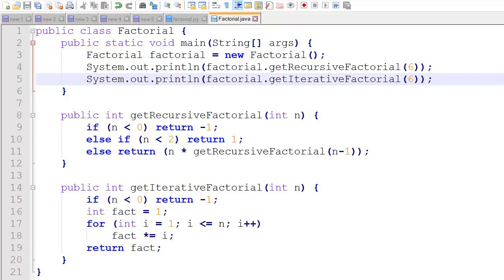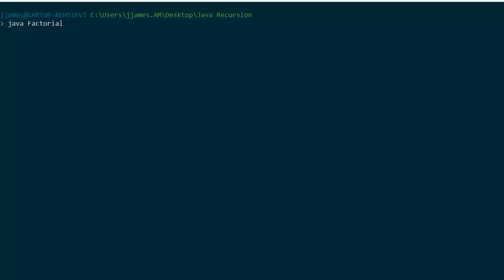So that's our program. Let's try and run it. First we'll compile it, and we'll run our program. And we get 720 back for both methods.